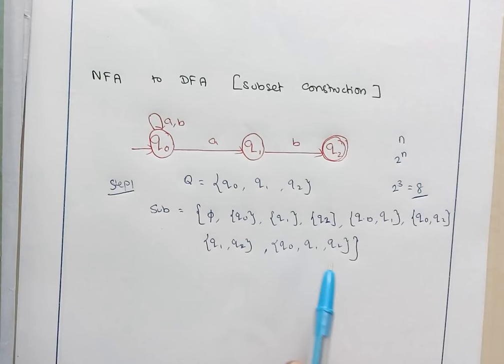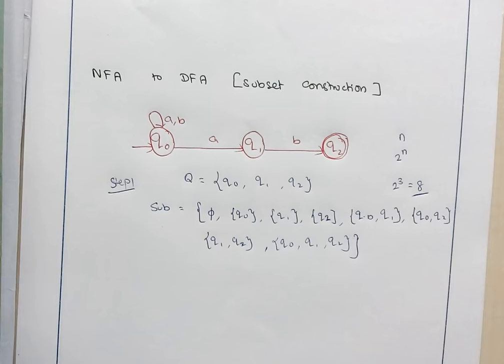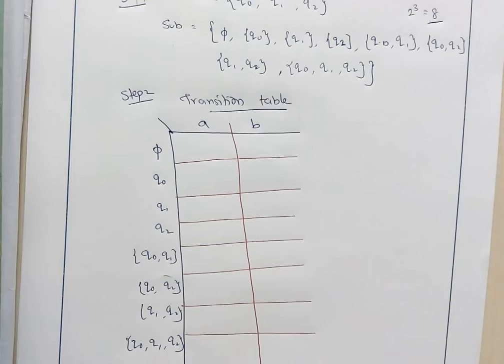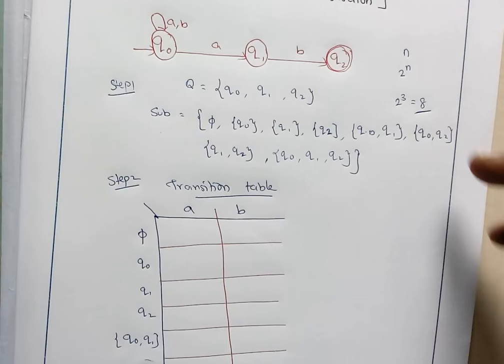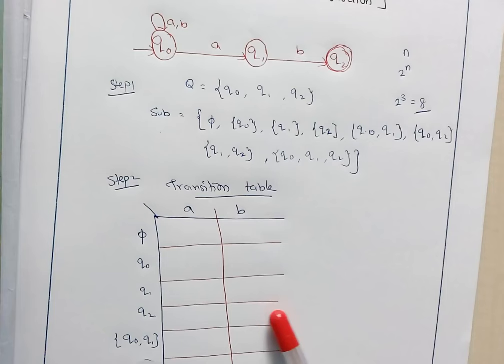This completes step 1. Step 2 is to form a transition table for all the subsets and inputs. The transitions for Q0, Q1, and Q2 will be taken from the NFA transition diagram. From the NFA, we write the transition for Q0 on A and B, Q1 on A and B, and Q2 on A and B, and the remaining entries will be filled by combination.